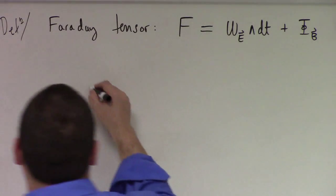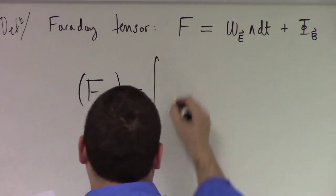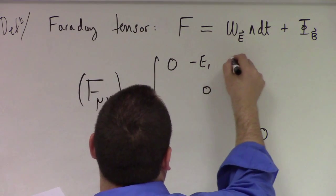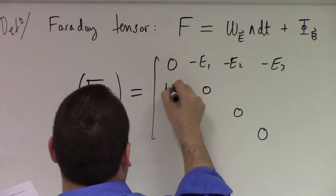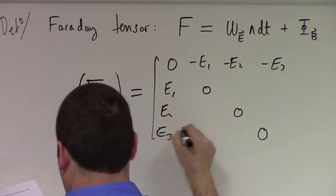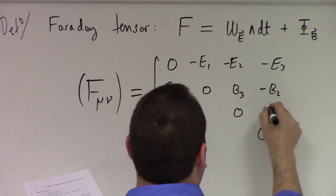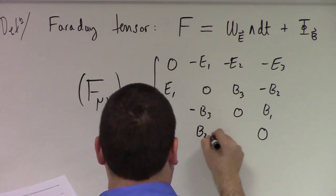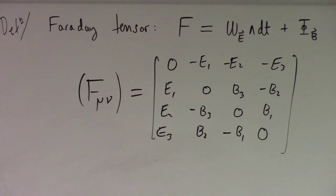If I was to rewrite it as a matrix F_mu_nu like this, it's got zeros on the diagonal. And it's got minus E_1, minus E_2, minus E_3 up here; E_1, E_2, E_3 down here. And B_3, minus B_2, B_1, minus B_3, B_2, minus B_1. So sometimes in physics you'll see it presented in that kind of notation, but in terms of differential forms it's just that beautiful thing I wrote right there.